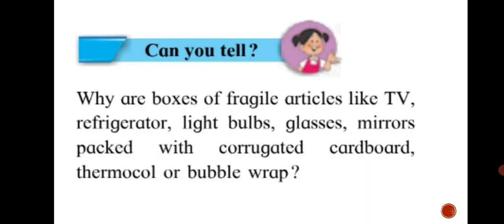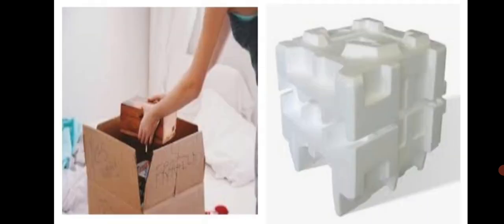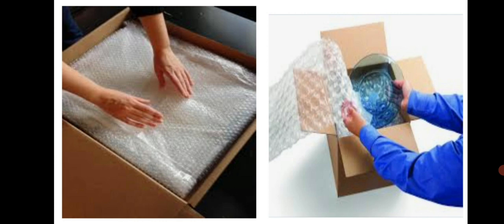Can you tell why are boxes of fragile articles like TV, refrigerator, light bulbs, glasses, mirrors packed with corrugated cardboard, thermocall or bubble wrap? Let's have a look at the answer. You can see some articles are carefully packed in boxes. The reason could be fragile articles are more likely to break if proper packing is not done. The cardboard, thermocall or bubble wrap protects the fragile articles. Even when the boxes shake, fall or get heat, the article inside are not damaged.